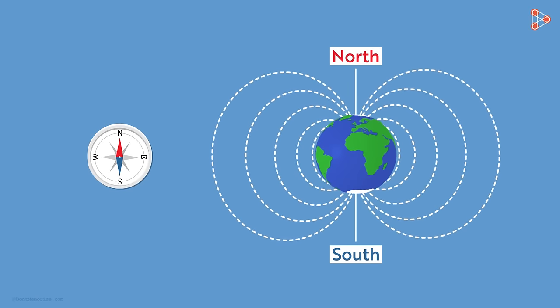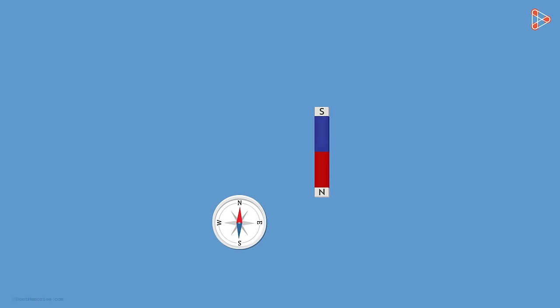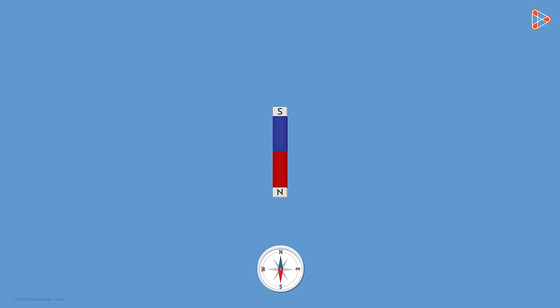What will happen if we bring any magnet near this compass? Well, if we bring the north pole of a bar magnet near the red needle, the needle will show deflection. The needle now aligns itself in the direction of the magnetic field of this bar magnet.